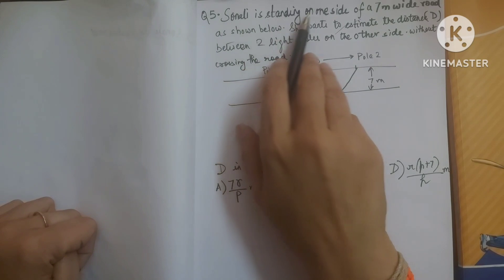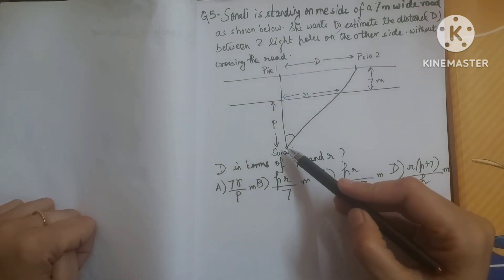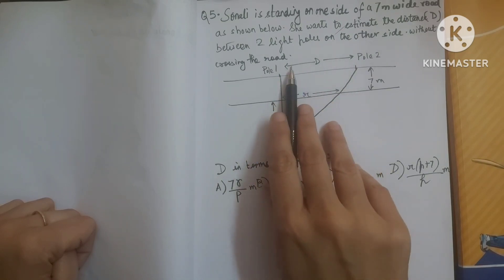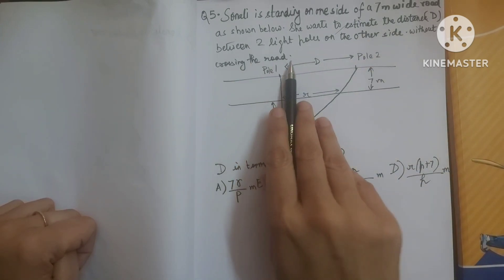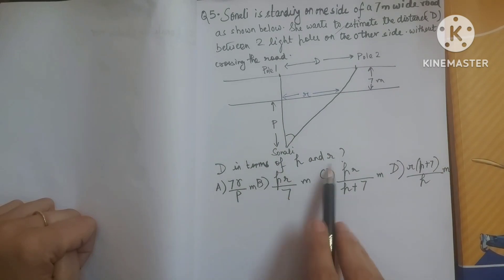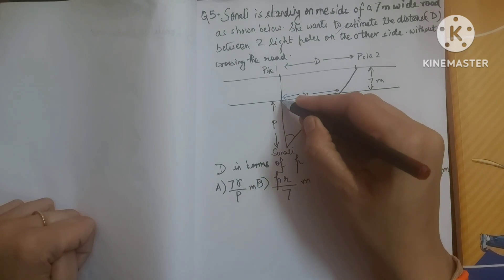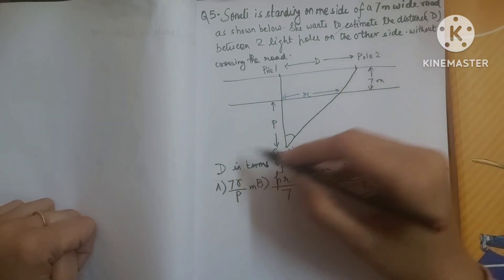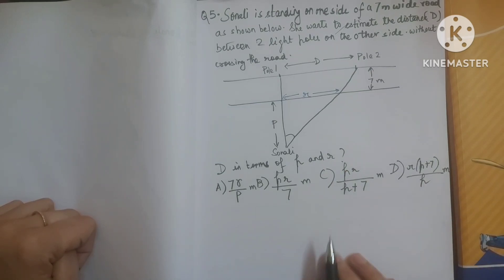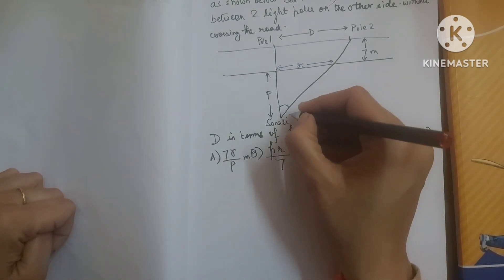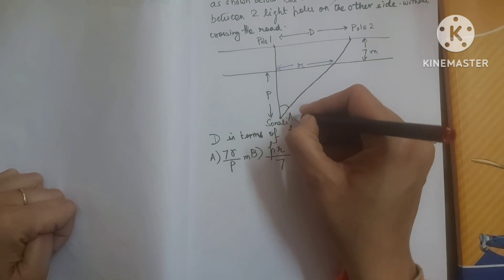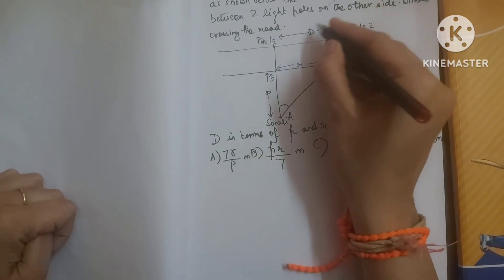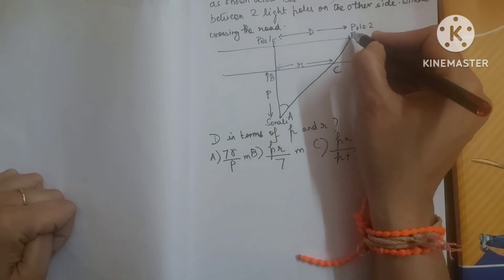Now question number 5: Sonali is standing on one side of a 7-meter wide road. She wants to estimate the distance D between two light poles on the other side, without crossing the road. P is the distance from Sonali's position along her side of the road, and R is the distance between a reference point on her side. We label the points: A, B, C on the smaller triangle and A, E, F on the larger triangle.